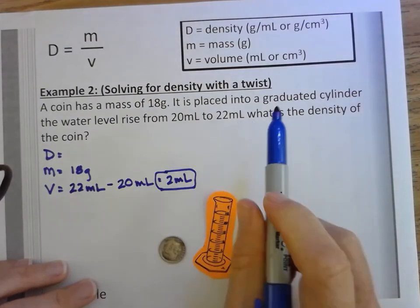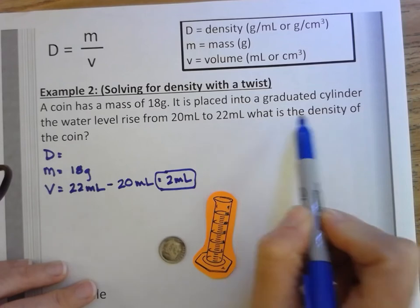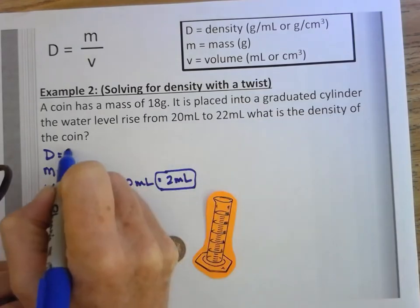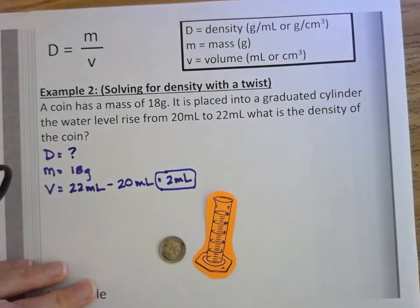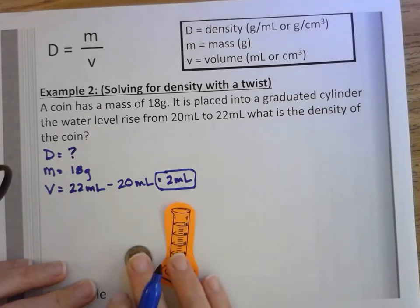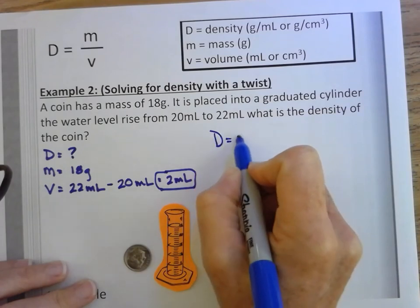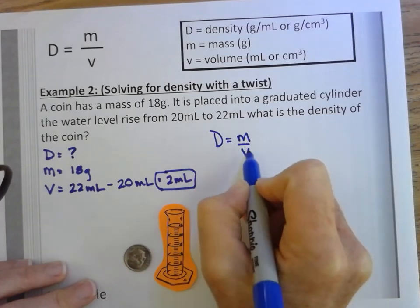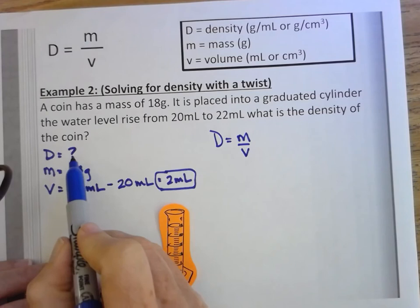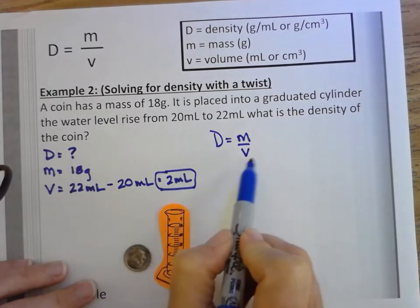If we continue reading the question, it says, what is the density? So I'm looking for density, so just like we did earlier, I'm just going to put a question mark there. Now I'm going to continue just like we did earlier. I'm going to list the formula: D equals M over V. I'm looking for density. My formula is set up to solve for density.